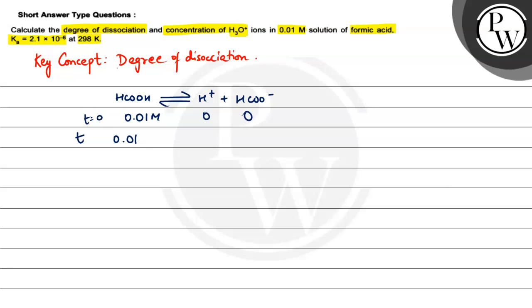So what happens here, we will have 1 minus alpha. And then H plus, what happens is 0.01 alpha, and HCOO minus 0.01 alpha. So this is what we have.